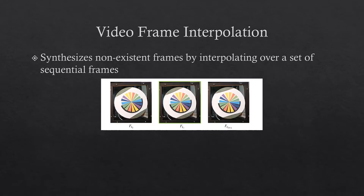A short recap of video frame interpolation. The goal of video frame interpolation is to synthesize non-existent frames by interpolating over a set of sequential frames in the video stream, when the interpolated frame is somewhere between the keyframes in time. The interpolated frame does not have any temporal evidence as prior, therefore it does not necessarily represent a real scenario.